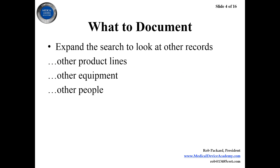So what do you document for root cause? Number one: you can't just look at the thing the auditor or inspector found. You have to expand your search to look at other records on other product lines, other equipment, other people. If it's a person's training record, you don't just look at that person's training records — you look at others. You want to expand the scope to see how big the problem is. If you find nothing else, it's a small problem. But if it's in many places, now you have a systemic problem requiring a much bigger corrective action.